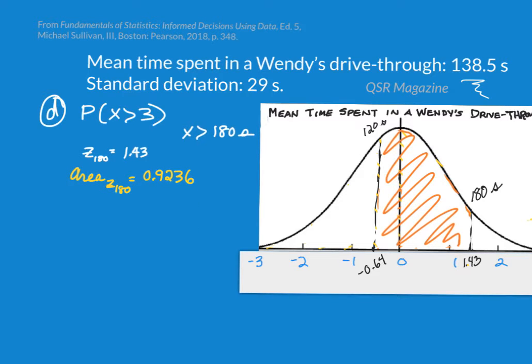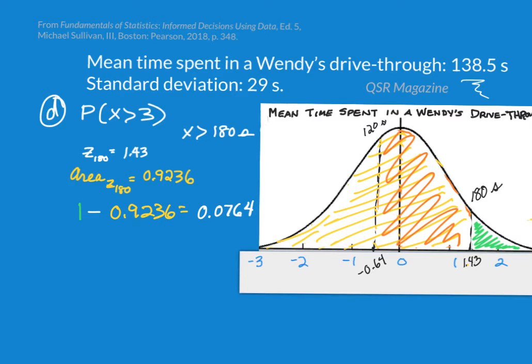In fact, knowing the z-score for 180 seconds or three minutes and the area to the left of that z-score are very important for this. Even though we don't want to know the percentage of people who spend less than three minutes, we're interested in the people who spend more than three minutes. The area under the curve is 1. So if we take 1 and we subtract the area to the left of that z-score of 1.43, it equals 0.0764. So about 7.6% of people, or of cars, will spend more than three minutes in the drive-thru.